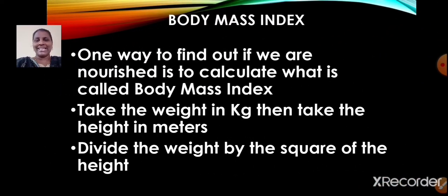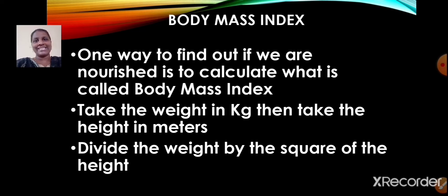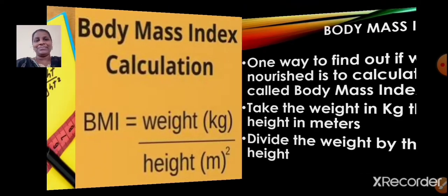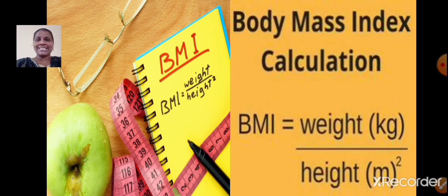Now let us talk about body mass index. One way to find out if we are nourished is to calculate the body mass index. With the help of BMI, we can come to know whether we are nourished or undernourished. To calculate BMI, take the weight in kilograms, take the height in centimeters and convert it into meters, then divide the weight by the square of the height.